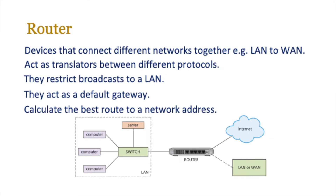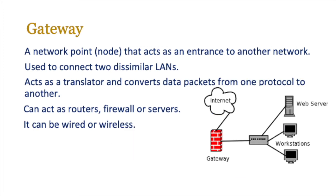The most commonly used device is the router. A router is so popular that it's the backbone of the internet. Devices that connect different networks together are basically routers — they're like bridges, but bridges connect similar local area networks using the same protocol. A router has the ability to act as a translator between different protocols, so it allows a LAN to connect to a WAN with all sorts of different combinations possible. They restrict broadcasts to a particular LAN itself and act as a default gateway device, meaning everything has to pass through them. They calculate the best route to a network address, and through intelligent rerouting, they ensure that data gets to the right destination as fast as possible.